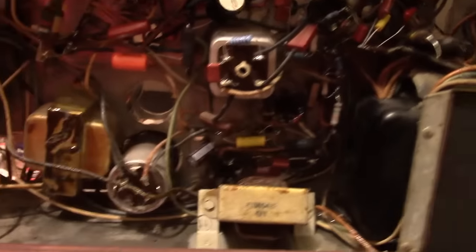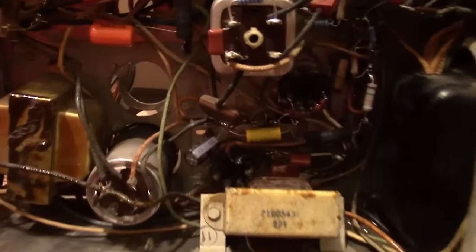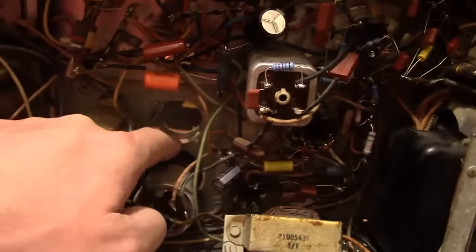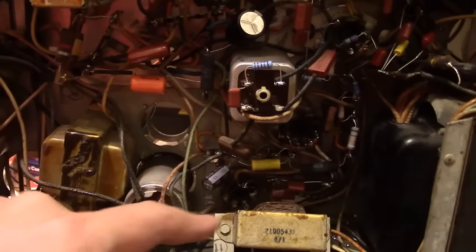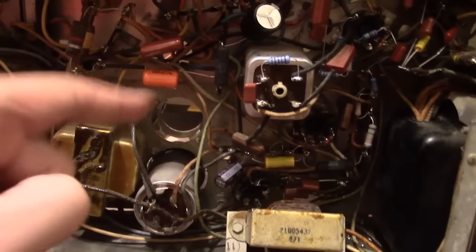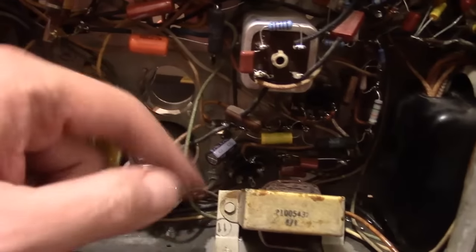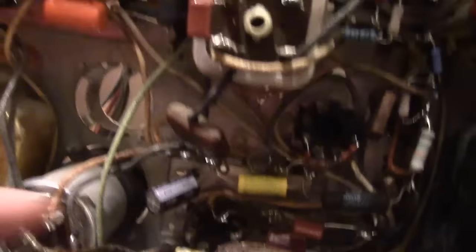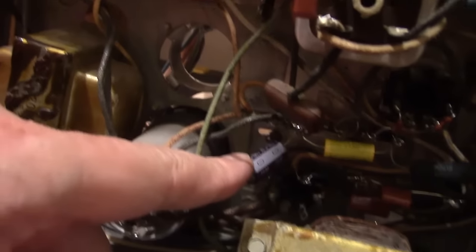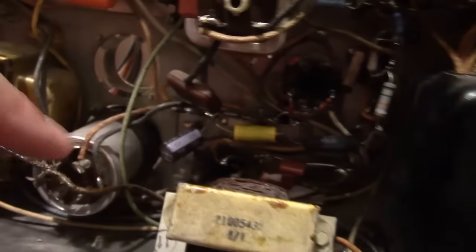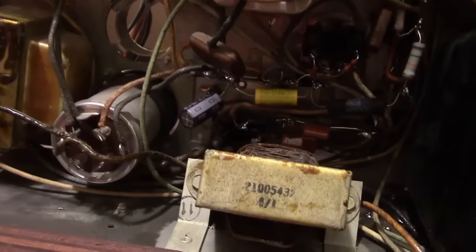The cap that was down in here, that was easy. That's going between the ground chassis and the negative supply. So the positive goes to the chassis, the negative goes to the supply rail. I just tacked one side to the chassis and the other to the negative bus right about where the original was, but of course the new one was much smaller.